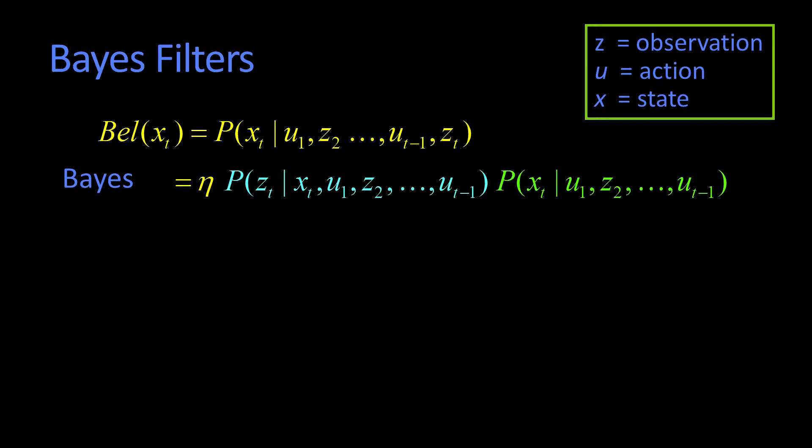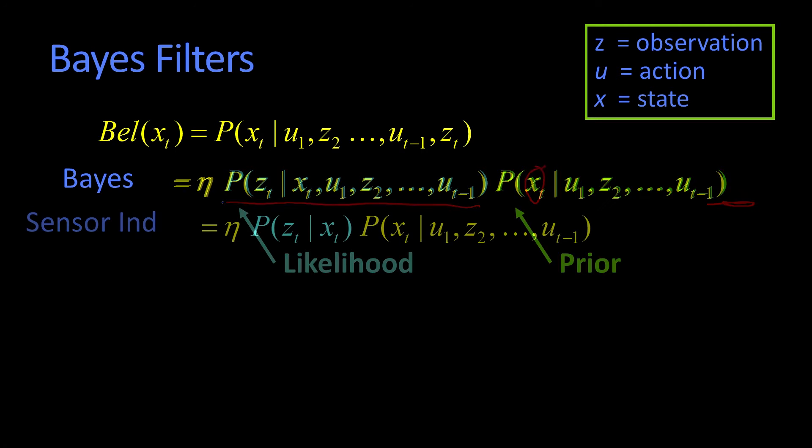So we're going to use the Bayes rule that we just showed, that says we can swap that around by putting in the likelihood and the prior. And the prior is just xt without the zt over here. That was our prediction about what xt was. And this is the likelihood model. This is just our sensor likelihood model. What's the likelihood of getting that value?